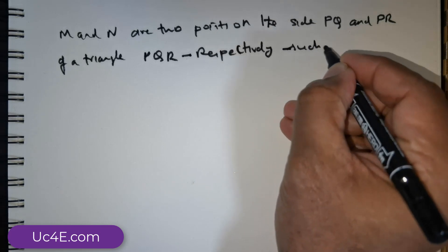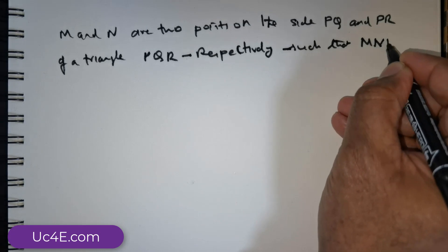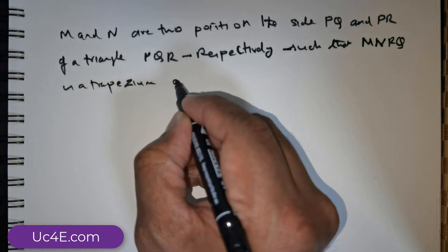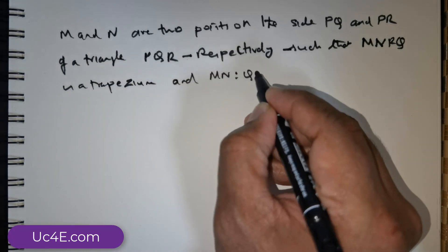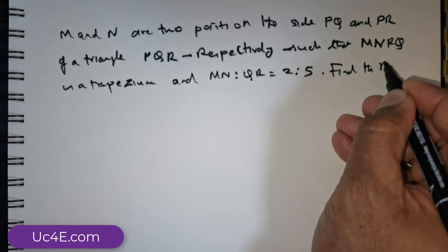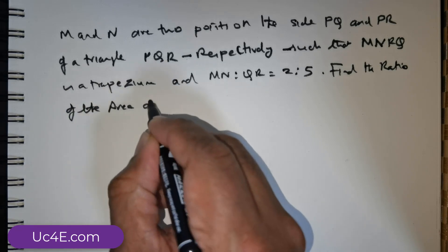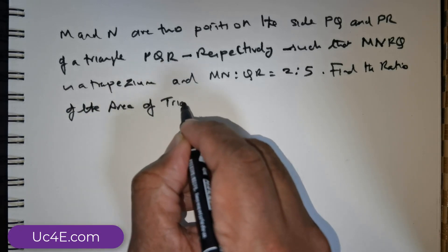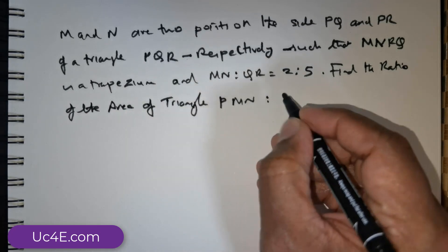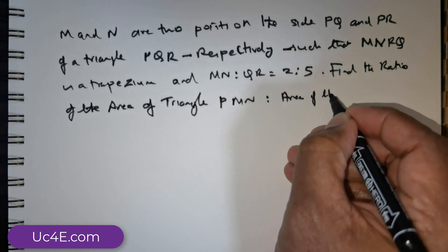Such that MNRQ is a trapezium and we've been given that MN is to QR is in the ratio of 2 is to 5. We are expected to find the ratio of the area of the triangle PMN to the area of the trapezium.